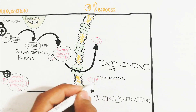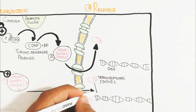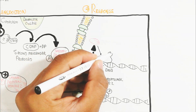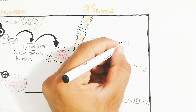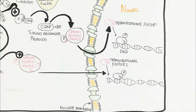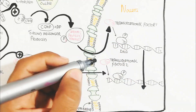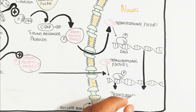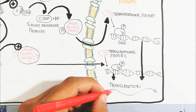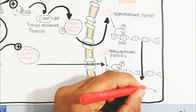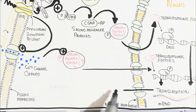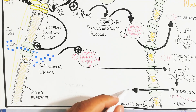Inside the nucleus, the cascade activates specific regions of DNA. Transcription factors one and two bind to specific regions of DNA and initiate transcription, producing messenger RNA. The mRNA exits through the nuclear pore into the cytoplasm, where ribosomes bind to it, forming polysomes, and translation produces specific proteins.